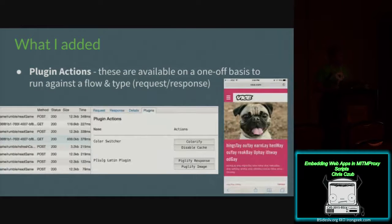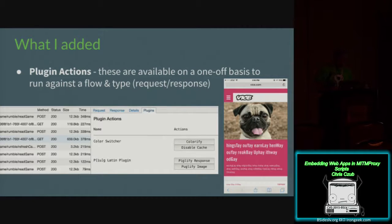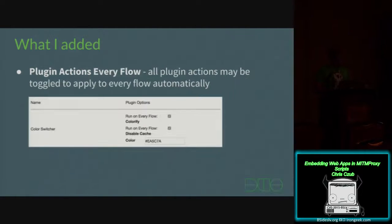Then I also added plug-in actions, available on either a one-off basis or to run persistently against every flow. Right here is my color switcher and pig-slash-pug-latin plug-in. The color switcher lets you configure a color to switch to — previously Vice wasn't so pink. The pig-and-pug-latin plug-in changes text to pig-latin and changes every image to pugs, making Vice a lot more bearable. On the plug-in options page you can also configure any plug-in actions to run across every flow automatically.